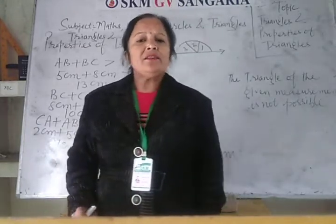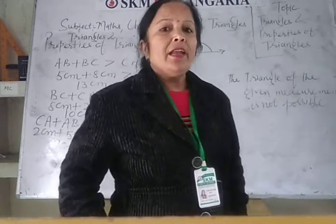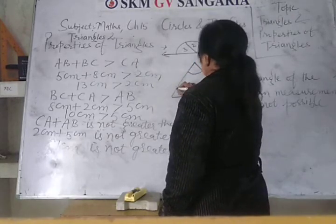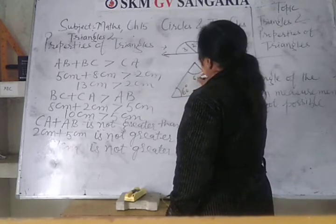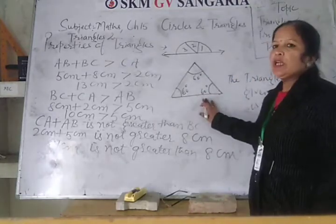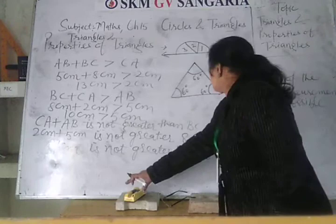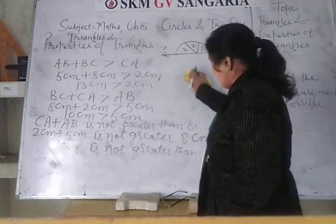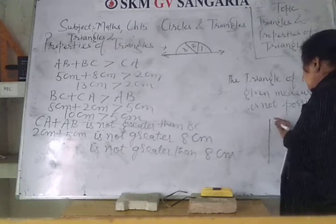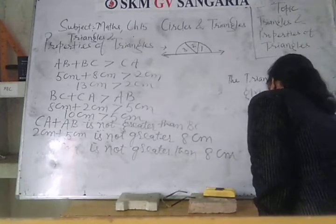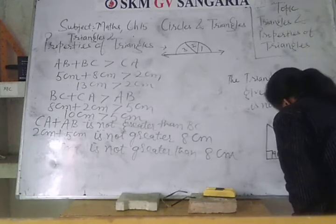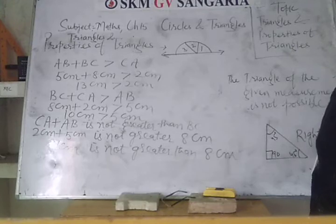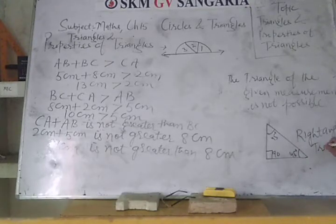Based on angles, triangles are of three types. When all the angles in a triangle are acute — for example 60 degrees each — then the triangle is called an acute angled triangle. A right angled triangle is when any one angle is 90 degrees and the other two are acute angles, then it is called a right angled triangle.